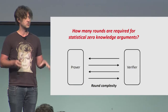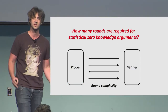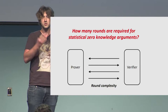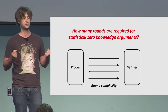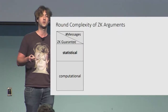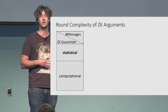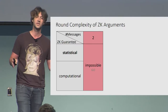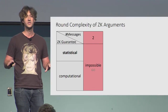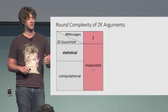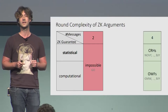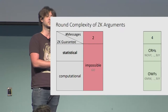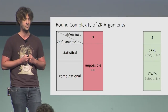The question we focus on in this work is a natural one: the round complexity of such arguments. How much interaction do you need to achieve statistical zero-knowledge? We know that some interaction is required — even computational zero-knowledge cannot be achieved in two messages. On the other hand, we've known for quite a while how to achieve zero-knowledge in four messages based on standard assumptions; for statistical zero-knowledge specifically, collision-resistant hash functions.